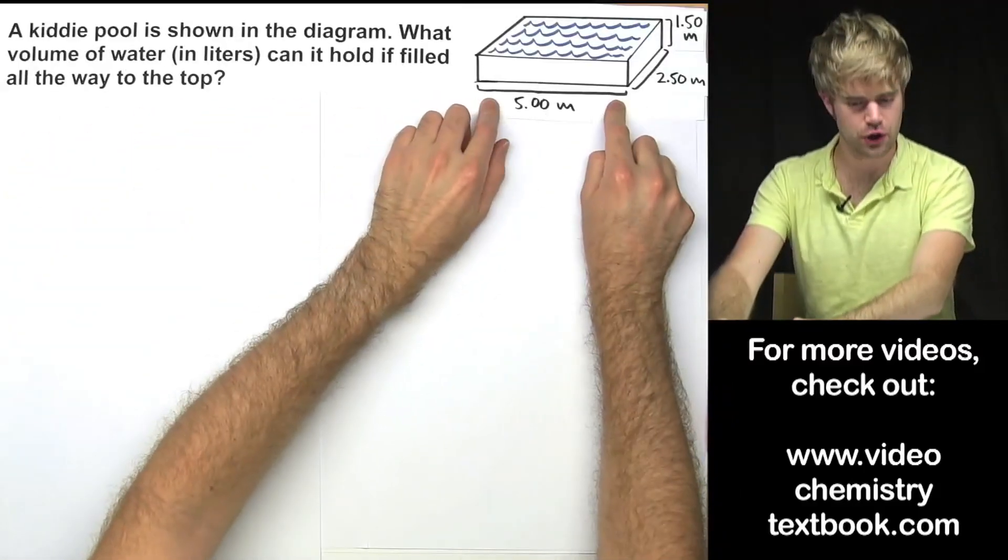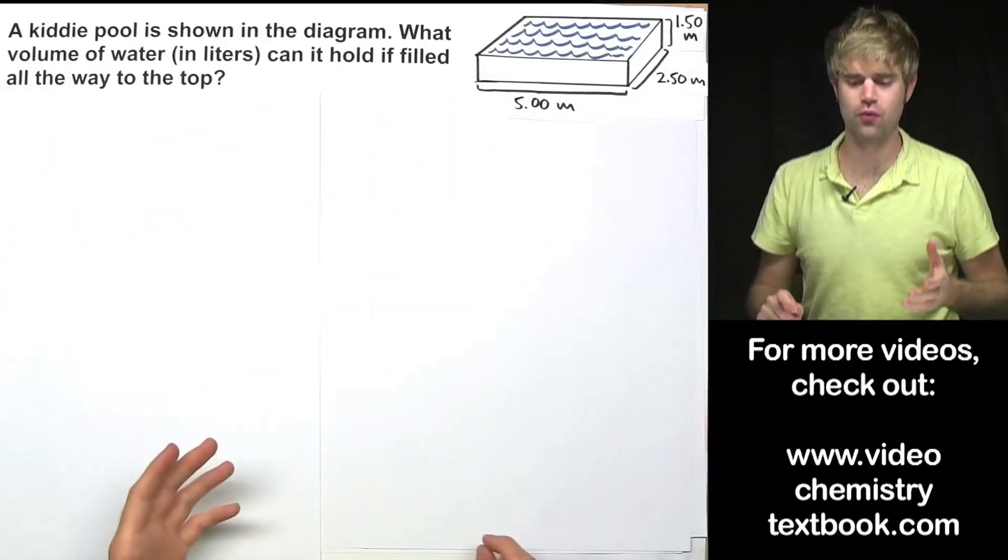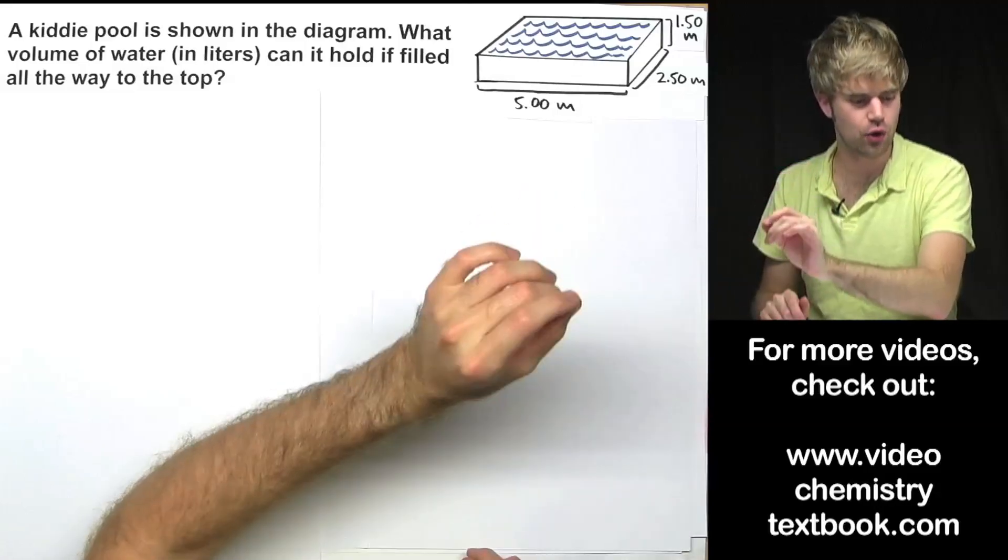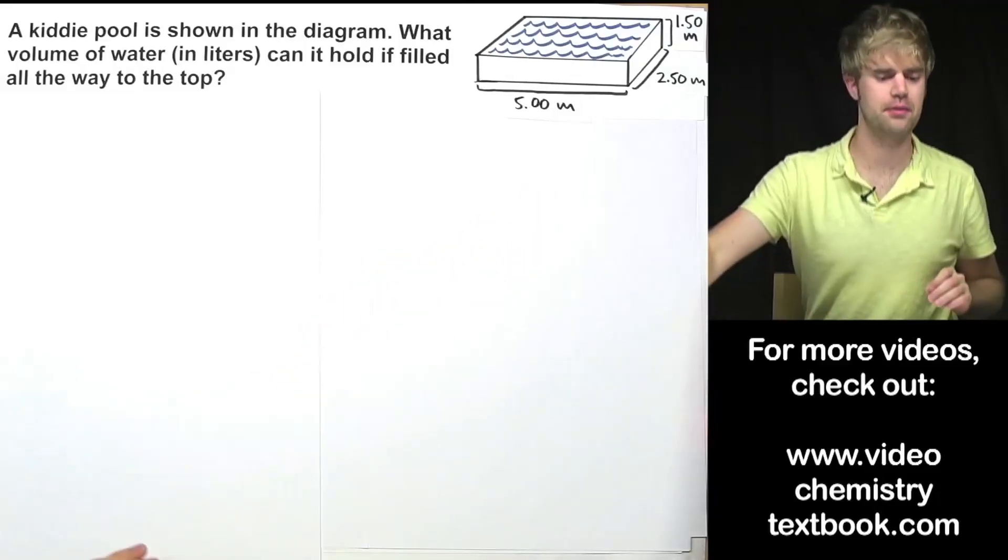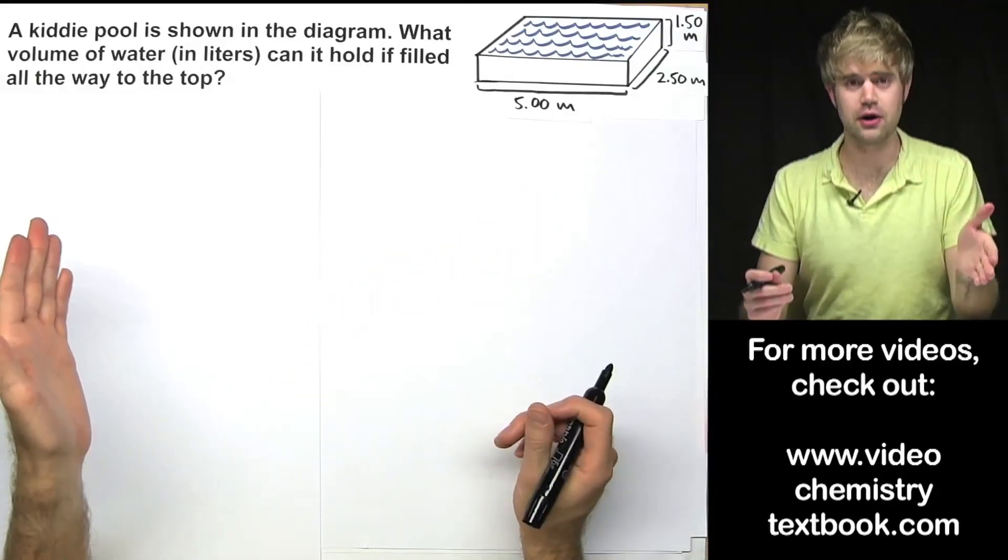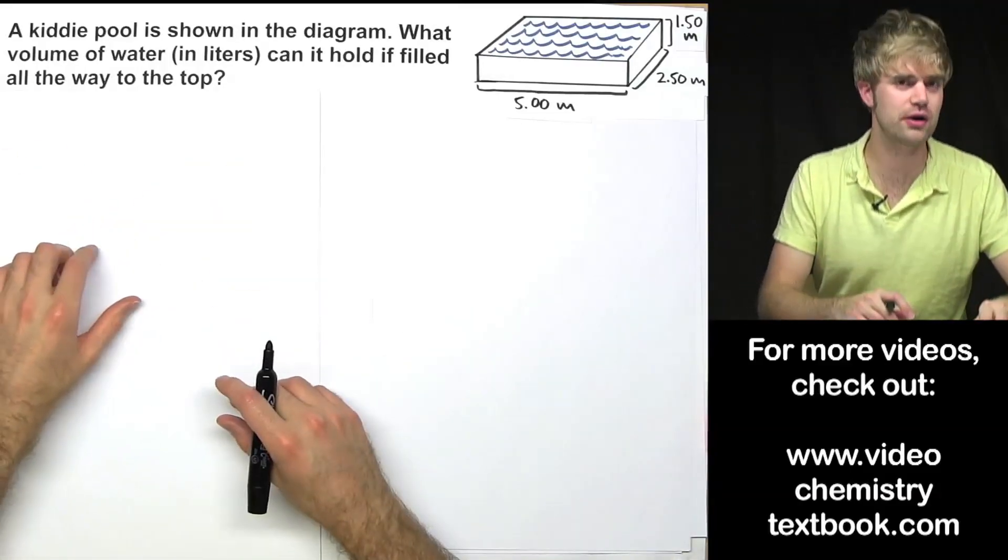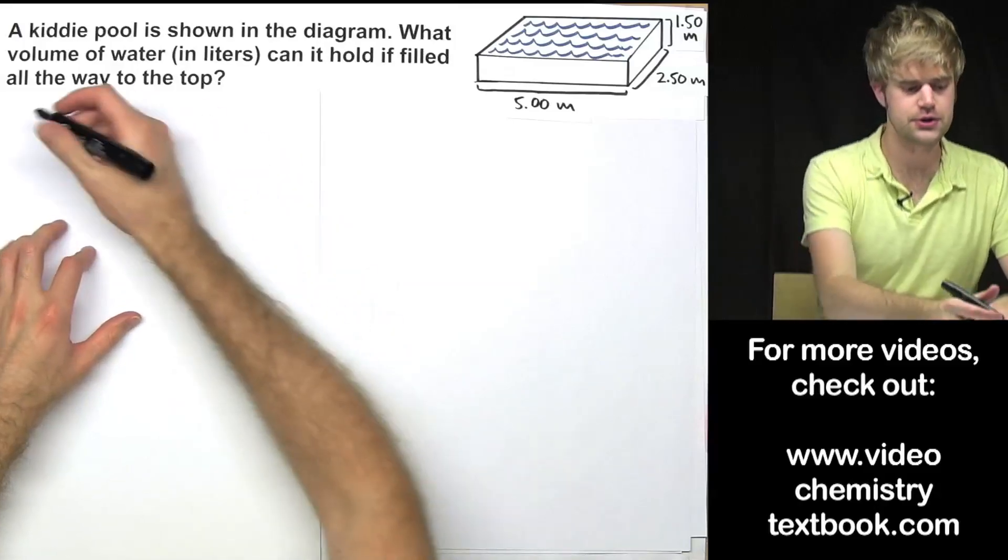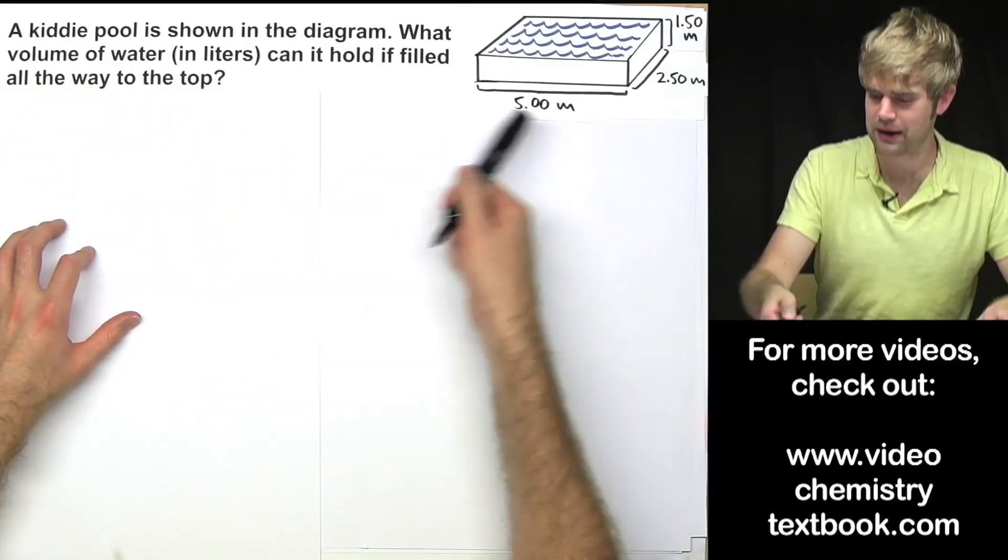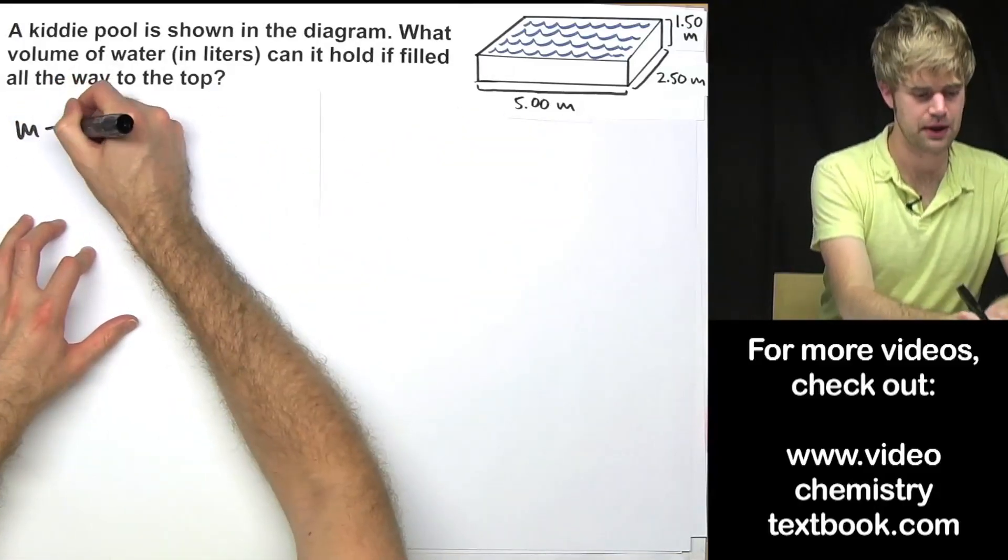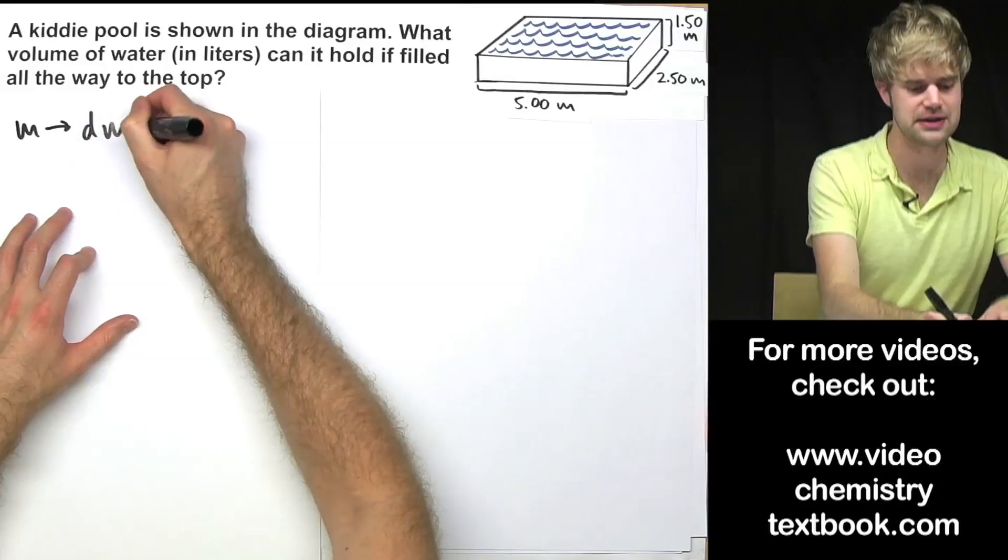A kiddie pool is shown in the diagram. What volume of water in liters can it hold if filled all the way to the top? So what I'm going to do here is sketch out my plan of attack. There are actually two ways that I can solve this. I'm going to show you what I think is the most straightforward one to start with.